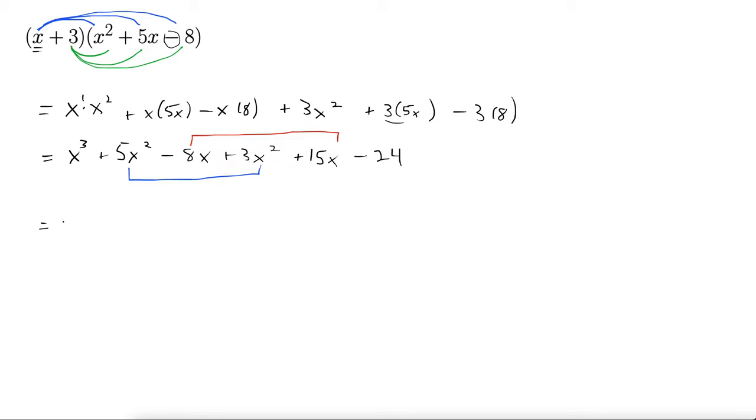So that leaves us with x cubed. 5x squared plus 3x squared is 8x squared. The x's here we have minus 8x plus 15x is plus 7x, and then minus 24.